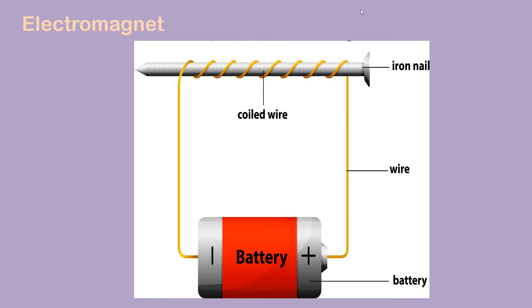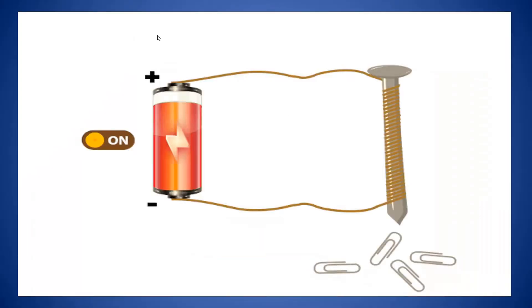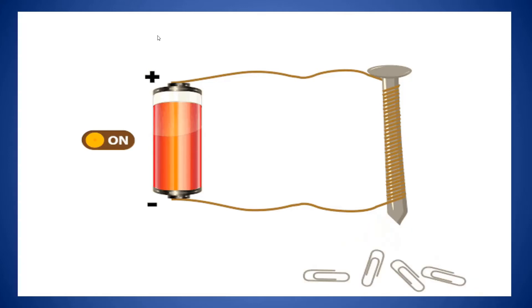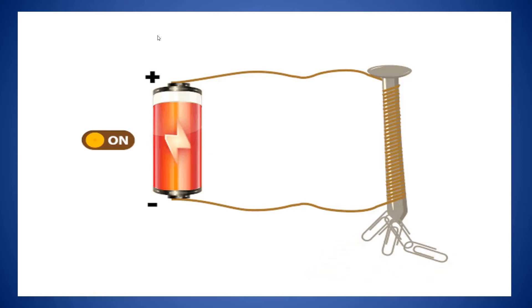Now, electromagnet. This magnetic effect of electric current is used to make an electromagnet. In order to make an electromagnet, we require an iron nail, wires, and a battery. First, we need to wind the nail with the wire, make turns, and connect both ends to the battery. This nail will behave like a magnet when electric current passes through this circuit, and so it is known as an electromagnet. When the circuit is on, the iron nail will attract a pin, and when we switch off the circuit, it will no longer attract the pin.